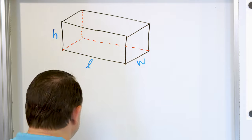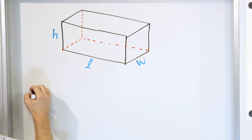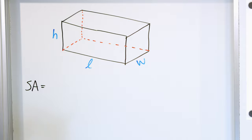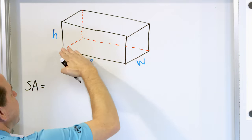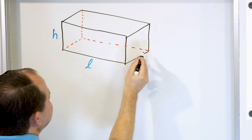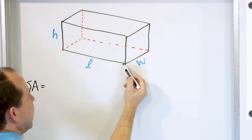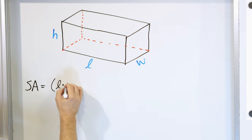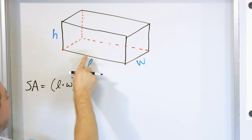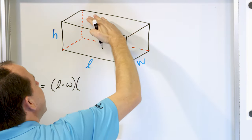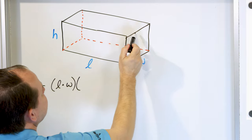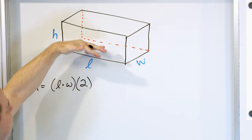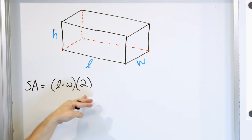If we were to find the surface area of this, first consider the top and the bottom. The bottom is a face that forms a rectangle. One direction of that rectangle is L and the other direction is W — length and width. So the area of the bottom is L times W. But there are two of those — the top also has the same dimensions, L and W. So we multiply by two. We find the area of the bottom and double it because the top has exactly the same dimensions.